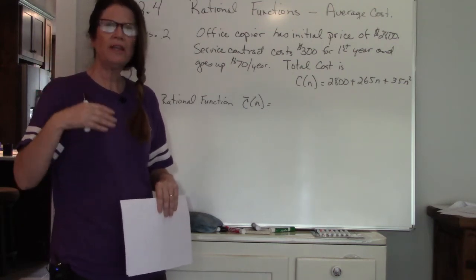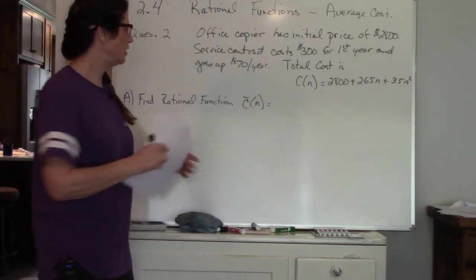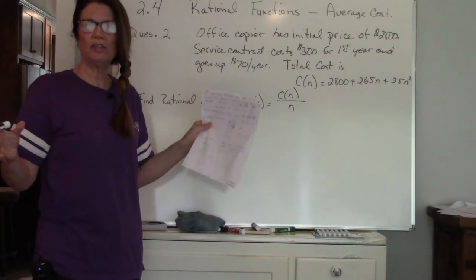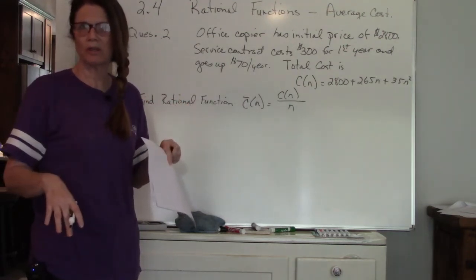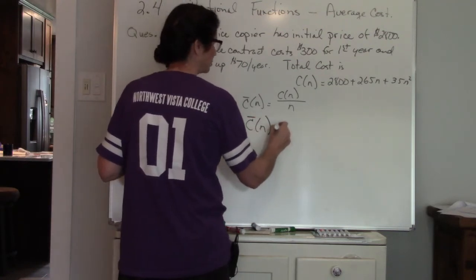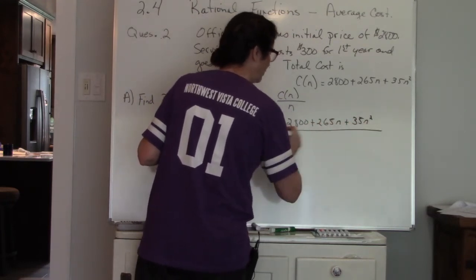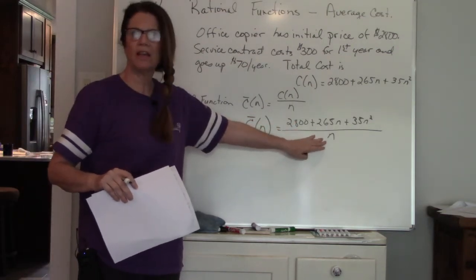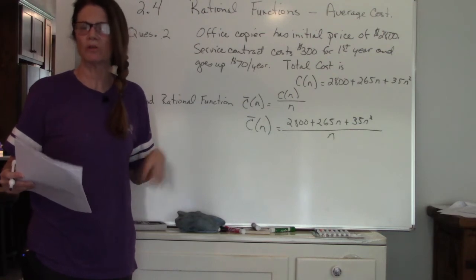Part A asks to find the rational function. Remember a rational just means a fraction. When we're dealing with average we're just going to take the cost function and divide it by the number of years. If you have five years of salary and you want to know your average salary over the five years, you take the total and divide it by the number of years. So your average cost is the total C(n) divided by N.